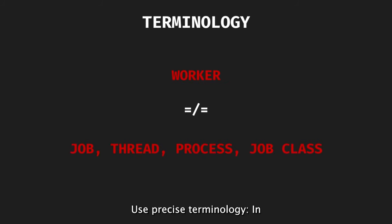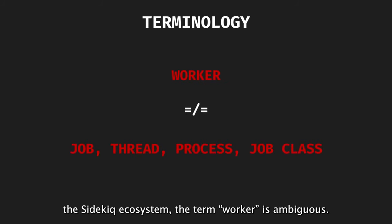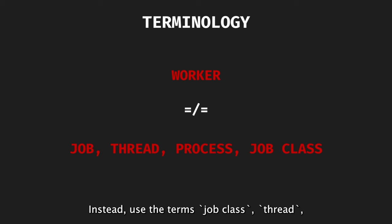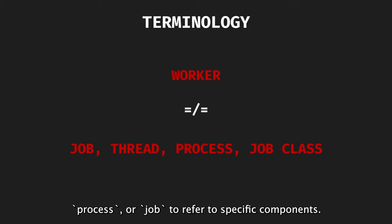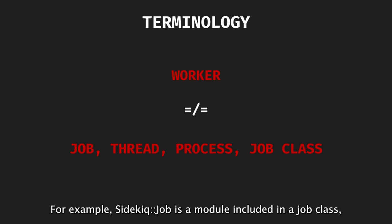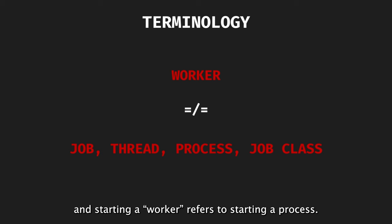Fourth, use precise terminology. In the Sidekiq ecosystem, the term "worker" is ambiguous. Instead, use the terms job class, thread, process, or job to refer to specific components. For example, Sidekiq::Job is a module included in a job class, and "starting a worker" refers to starting a process.